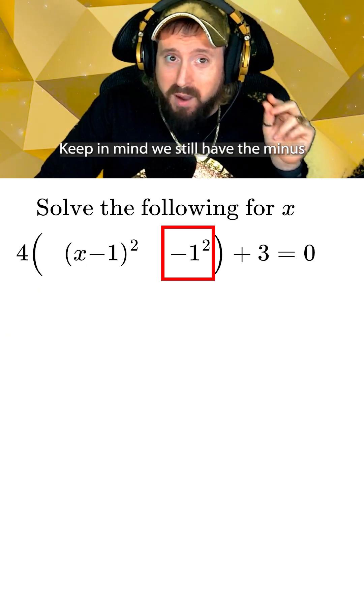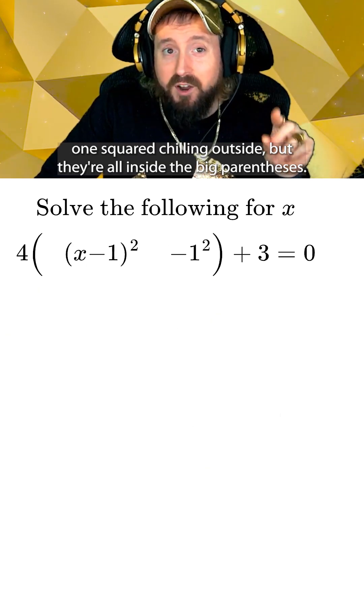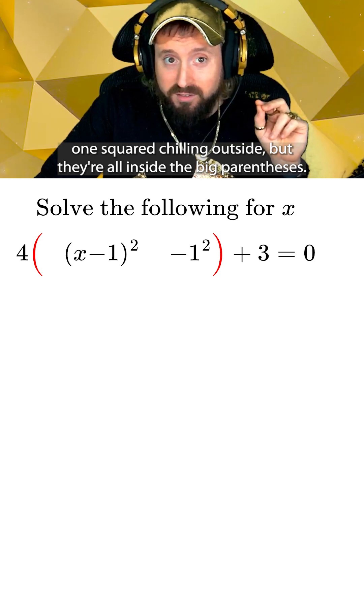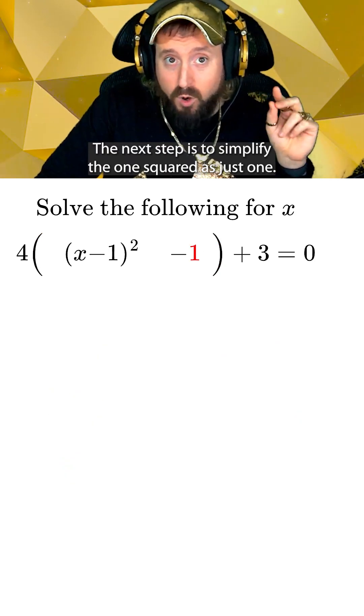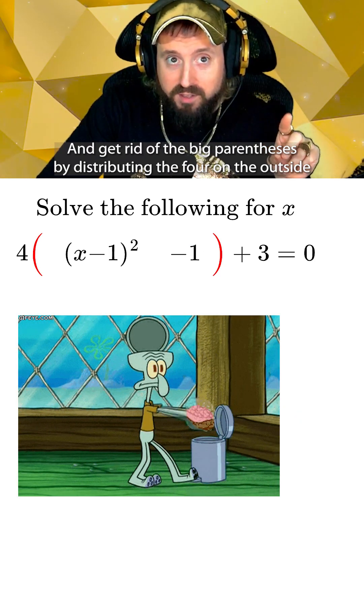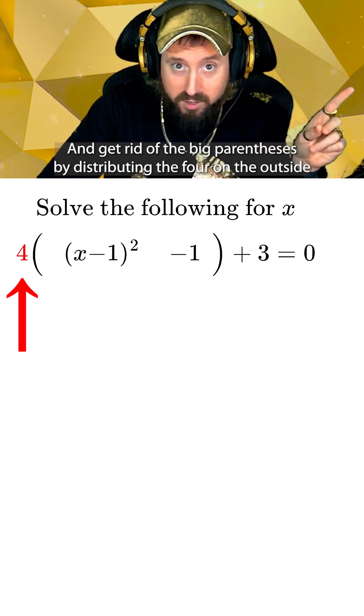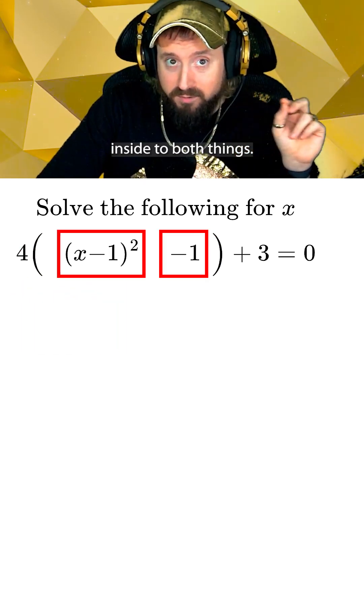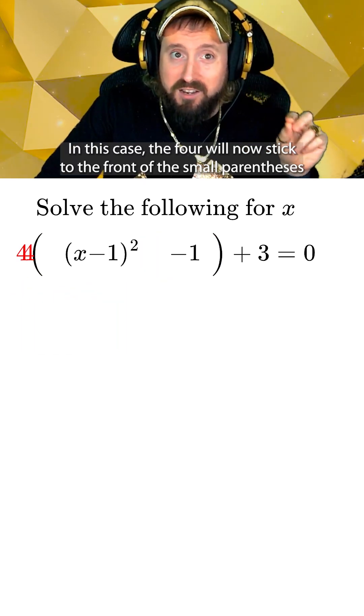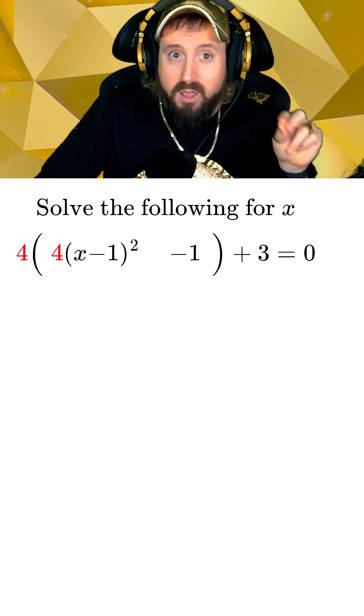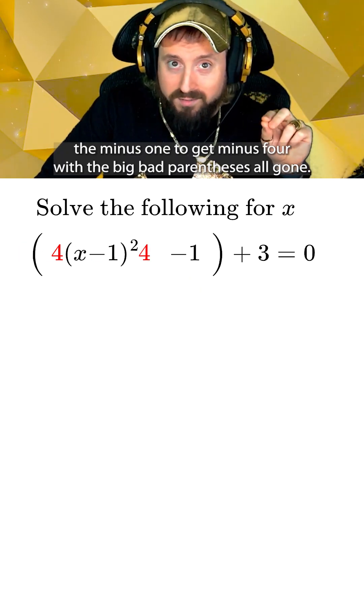Keep in mind, we still have the minus 1 squared chilling outside, but they're all inside the big parentheses. The next step is to simplify the 1 squared as just 1 and get rid of the big parentheses by distributing the 4 on the outside inside to both things. In this case, the 4 will now stick to the front of the small parentheses while also multiplying the minus 1 to get minus 4.